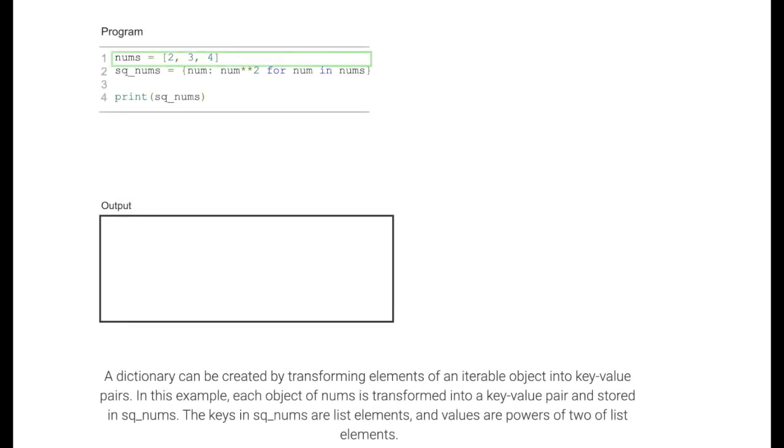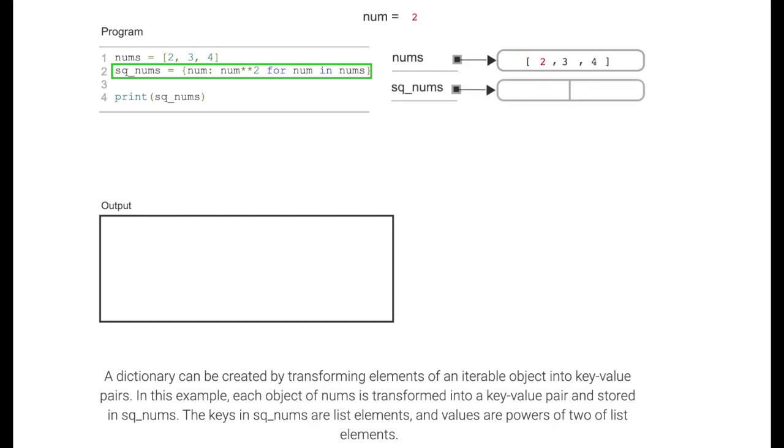A dictionary can be created by transforming elements of an iterable object into key-value pairs. In this example, each object of nums is transformed into a key-value pair and stored in sq_nums.